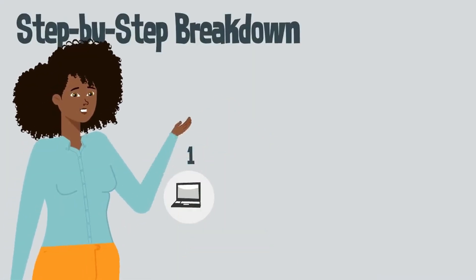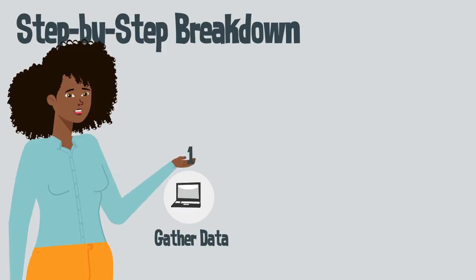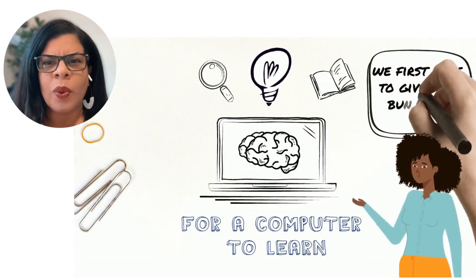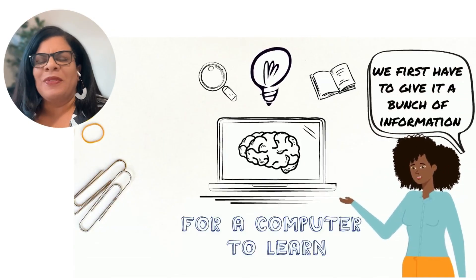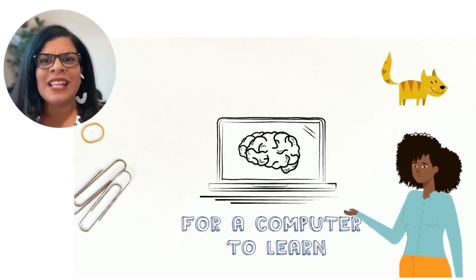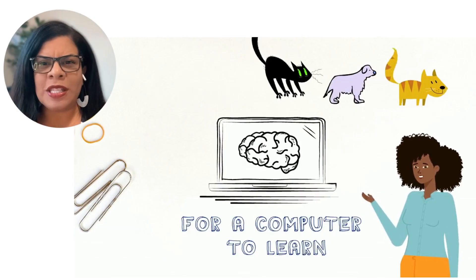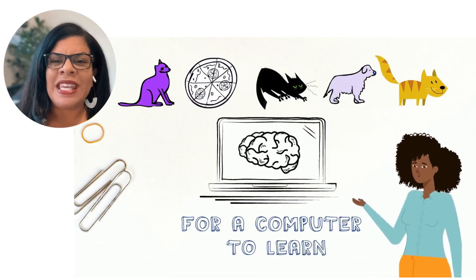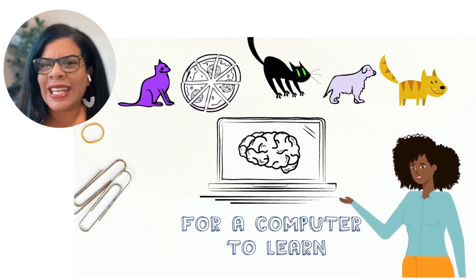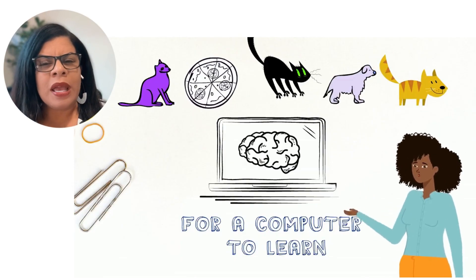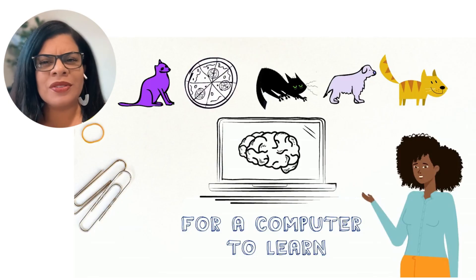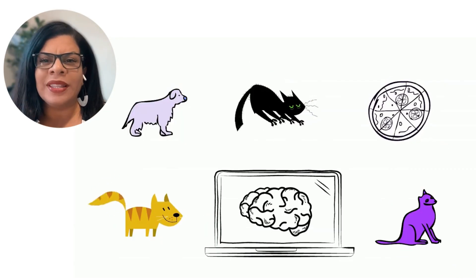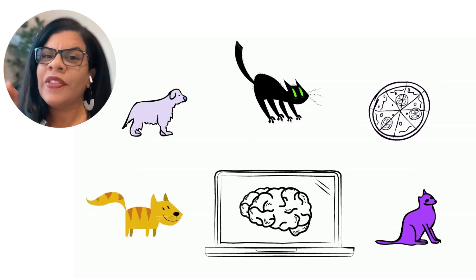Step number one is to gather data. For a computer to learn, we first have to give it a bunch of information to work with. Let's stick with cats. We start by showing the computer lots of pictures of cats. Some of these pictures have cats in them — fluffy orange tabbies, sleek black cats, tiny kittens — and some pictures don't. Maybe those are pictures of dogs, cars, or even pizza. And for each picture, we include the label: this is a cat, or this is not a cat.